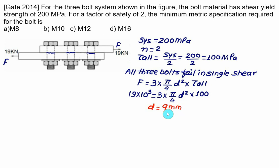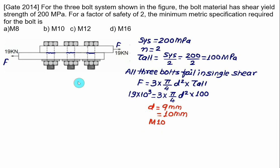Since 9 mm is not available, we go for 10 mm. This means we must select a bolt of size M10. So M10 — choice B — is the correct answer.